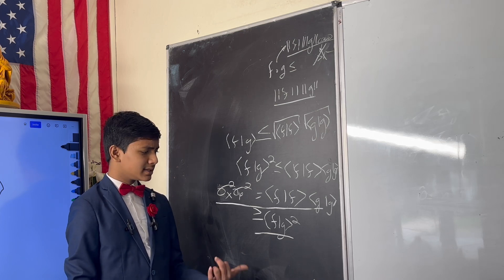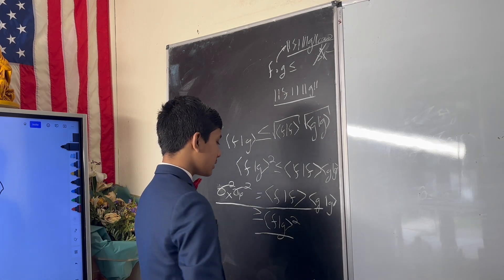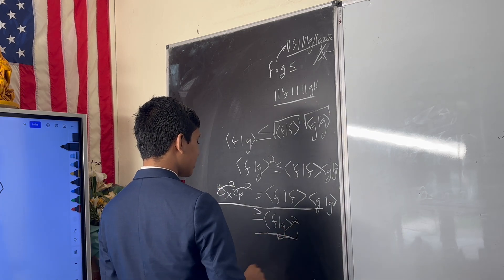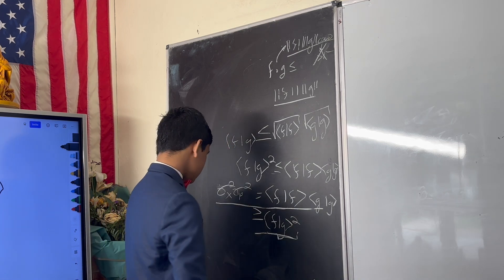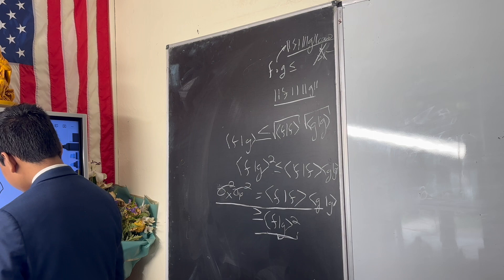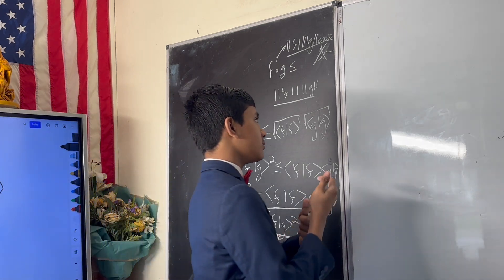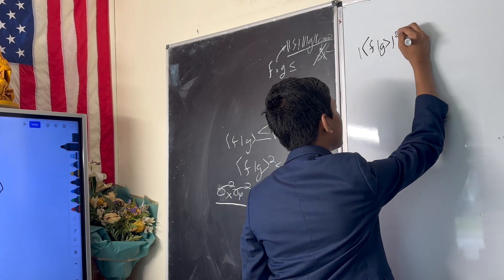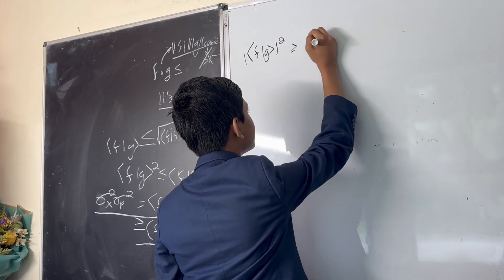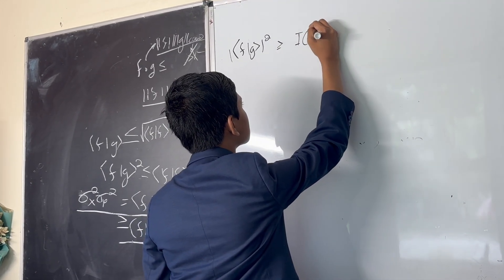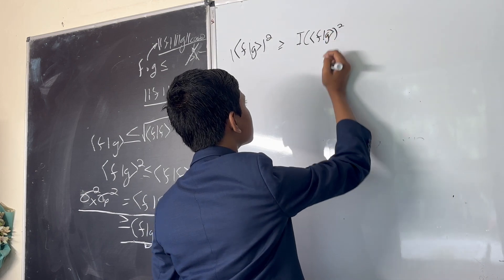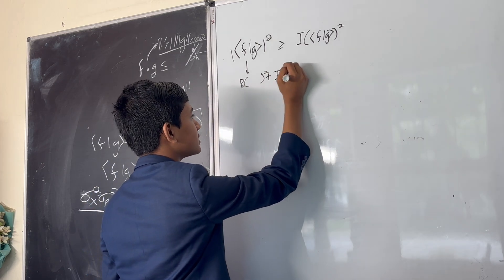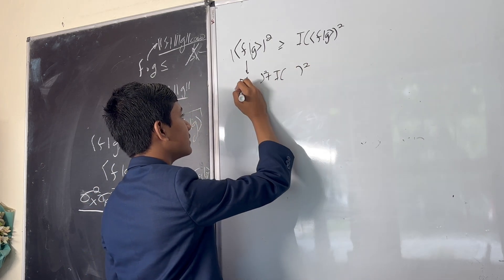But can we go any deeper? This still isn't what we want yet. Well, in fact we can. What exactly is inside f dot g squared? Well, recall that f dot g is some complex number. And so f dot g squared has to be greater than or equal to its imaginary part squared, given that this is equal to both its real part squared plus its imaginary part squared, and this cannot be negative.